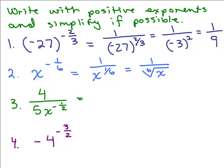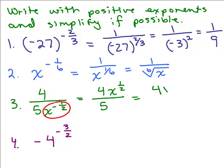Next one: 4 is in the numerator with a positive exponent (4 to the first), and same for 5. But x has a negative exponent. So I keep 4 and 5 where they are, but x to the negative 1 half becomes x to the positive 1 half in the numerator. You could further simplify by writing x to the 1 half as square root of x, giving you 4 square root of x all over 5. Be careful not to move the 5 up — it's 5 to the first, so there's no reason to move it. The negative 1 half exponent applies only to x.